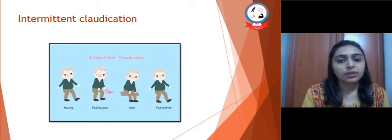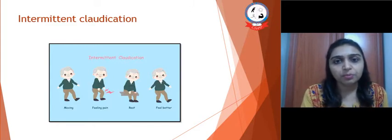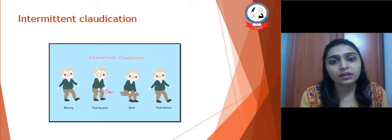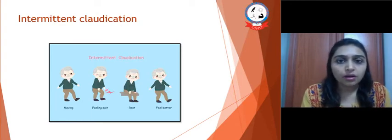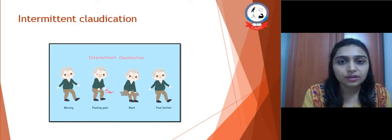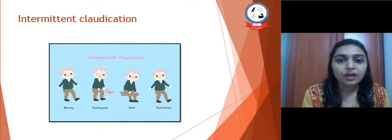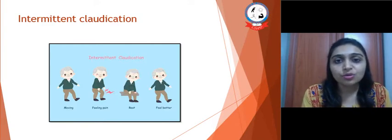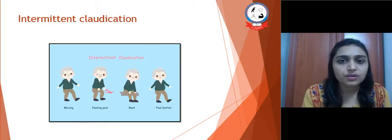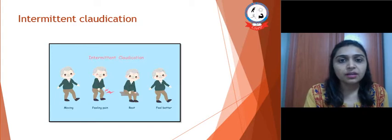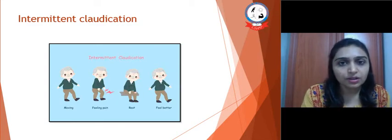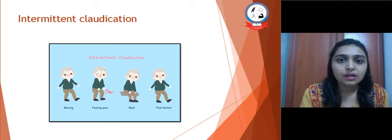Intermittent claudication is a cramp-like pain felt in the calf, or sometimes at the thigh in the quadriceps or hamstrings, or at the level of the glutei. The precipitating factor for this pain is movement — any kind of exercise like walking. When a person walks, after some time they may feel cramp-like pain in the muscles, which prevents them from walking further. If they take some rest, the pain reduces and they can walk again. Intermittent claudication is aggravated by movement or exercise and relieved by rest.